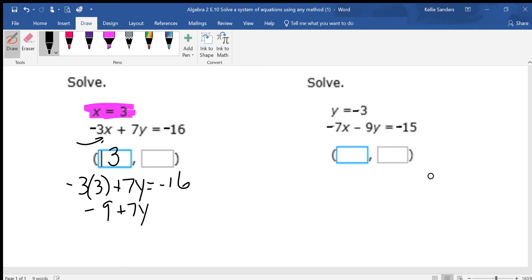Negative 9 plus 7y equals negative 16. Add the 9. 7y equals negative 7. Divide by positive 7, and you get negative 1. Y is negative 1.